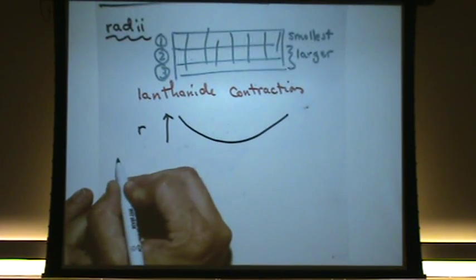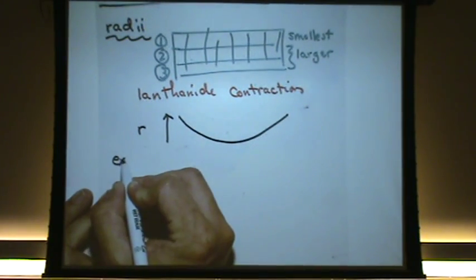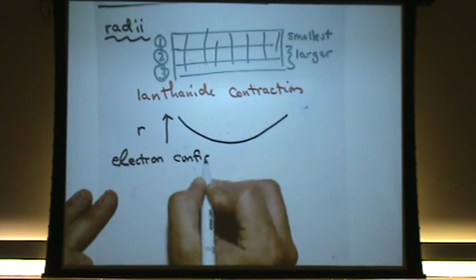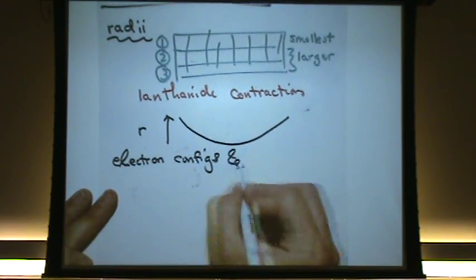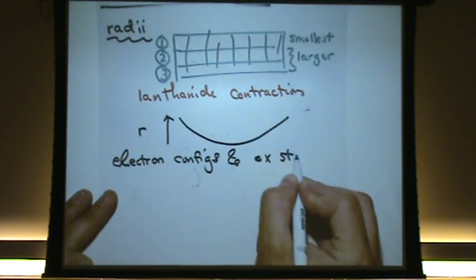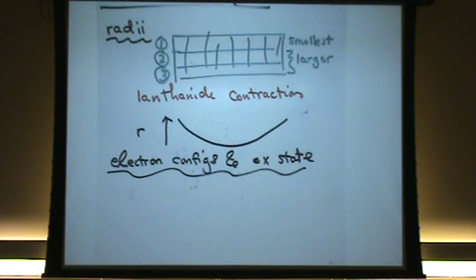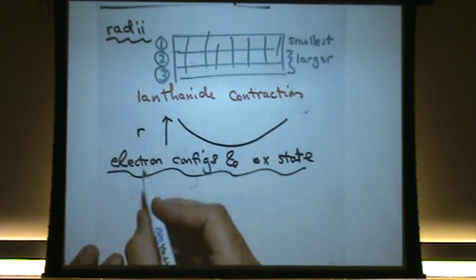The next concept is electron configs and oxidation state. Alright, this is stuff that we've seen pretty much already. You just want to get good at doing it again. To be able to write down the electron configuration, to be able to write down the oxidation states. So let's just do a couple of examples so you can see this.